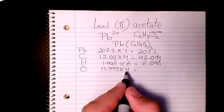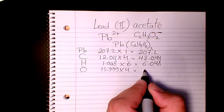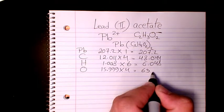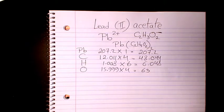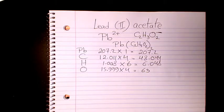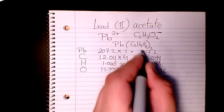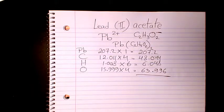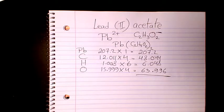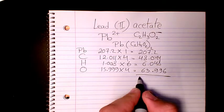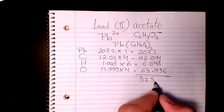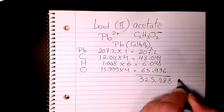And here we have 15.999 times 4, which is going to be 63.996. Then I need to add them all: 63.996 plus 6.048 plus 48.044 plus 207.2.